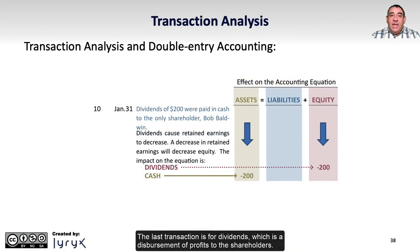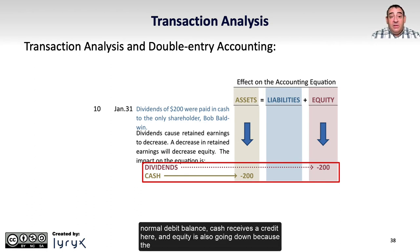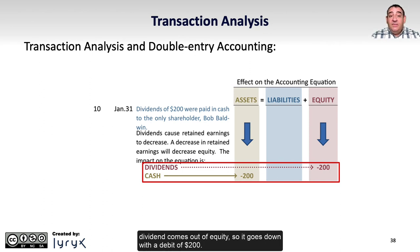The last transaction is for dividends, which is a disbursement of profits to the shareholders. Dividends of $200 were paid in cash, so cash is going down — since cash is an asset with a normal debit balance, cash receives a credit here. Equity is also going down because the dividend comes out of equity, so it goes down with a debit of $200.